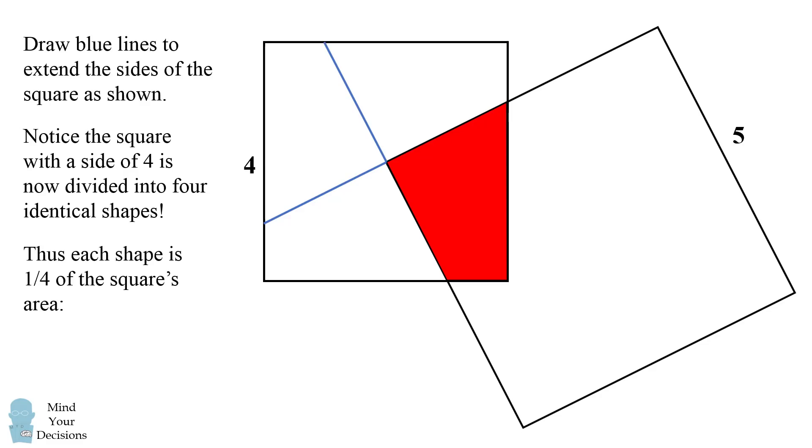Therefore, each shape is equal to 1 fourth of the square's area. So the red region has an area equal to the area of the square, which is 4 times 4 or 4 squared, and then we divide it by 4. This will be equal to 4.